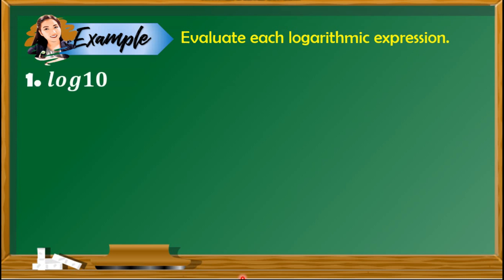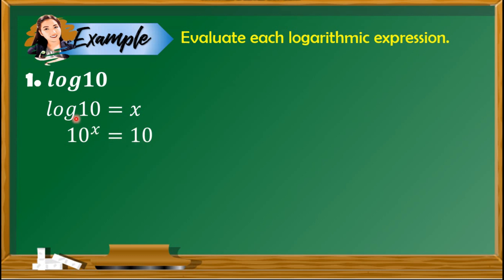Let's evaluate some logarithmic expressions. Find the value of log of 10. Let x be the value of this logarithmic expression. Convert to exponential form: 10 raised to x equals 10. Since no base is indicated, the base is automatically 10. We identify the exponent on the right side as 1. Applying the rule that when bases are the same we equate the exponents, therefore x equals 1. The value of log of 10 is equal to 1.